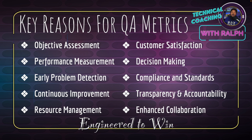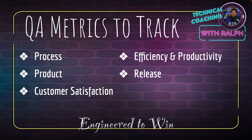The key reasons we track QA metrics: objective assessment using actual data, performance measurement, early problem detection — so you can get triggered when something's off in your systems — continuous improvement, resource management, customer satisfaction, decision making based on data, compliance and standards, transparency and accountability, and enhanced collaboration.